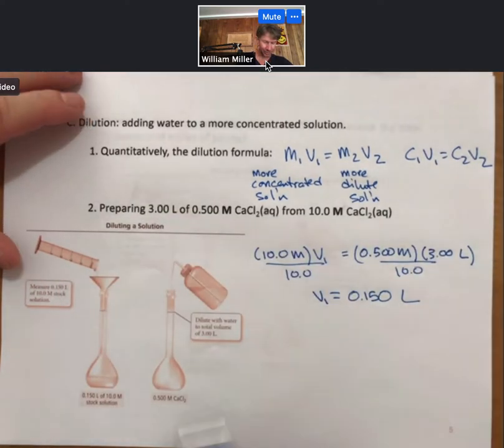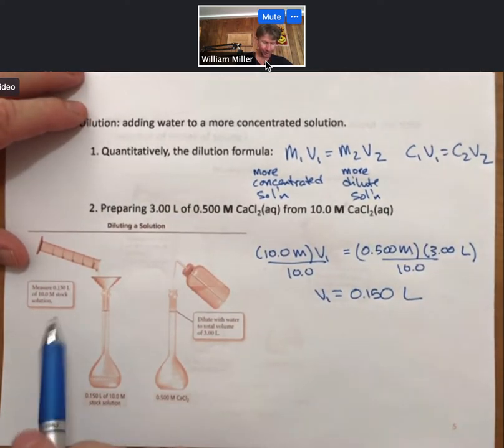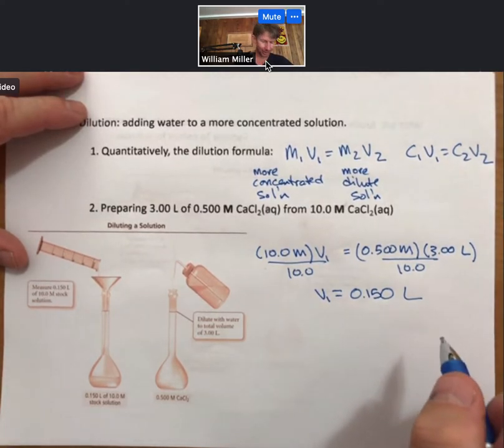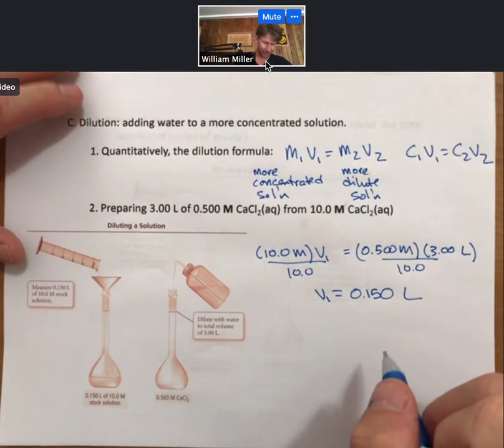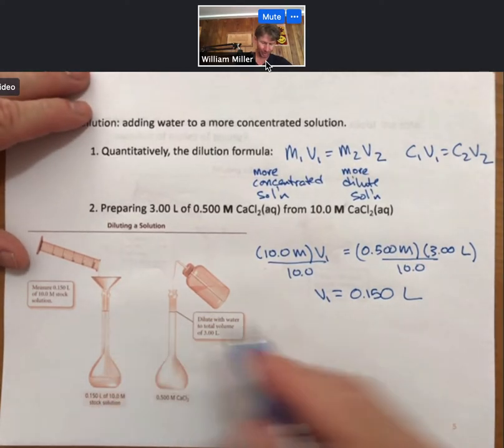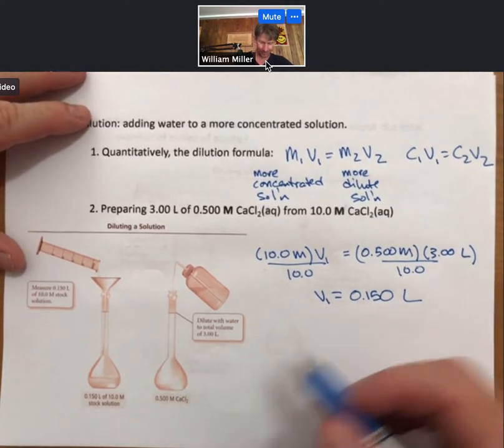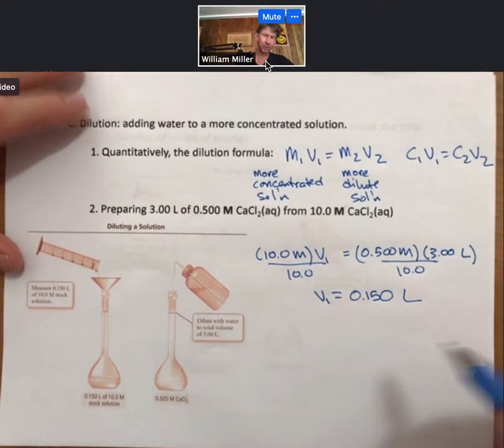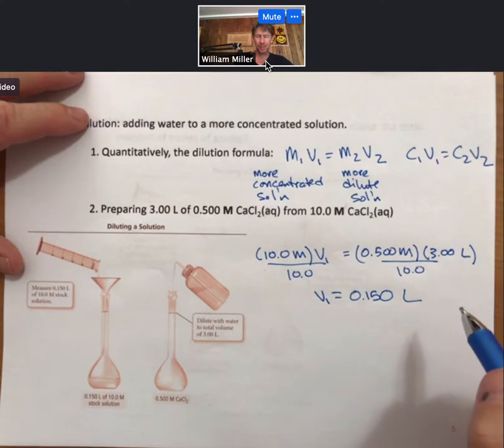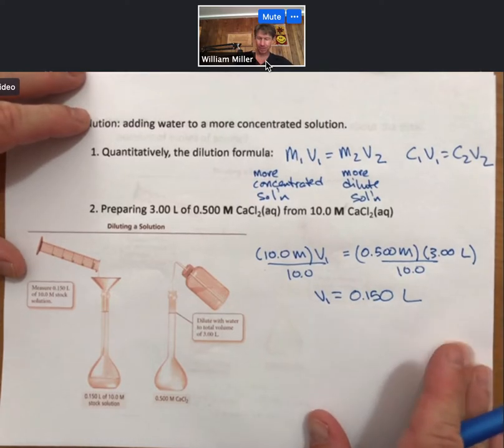So there we go. And we've got a little picture of this process, how we might do it. You're going to take 0.150 liters of the 10.0 molar stock solution, more concentrated solution, pour it into a three liter volumetric flask, add water, and then of course you're going to mix it as well. So that's a little bit about the process of dilution.